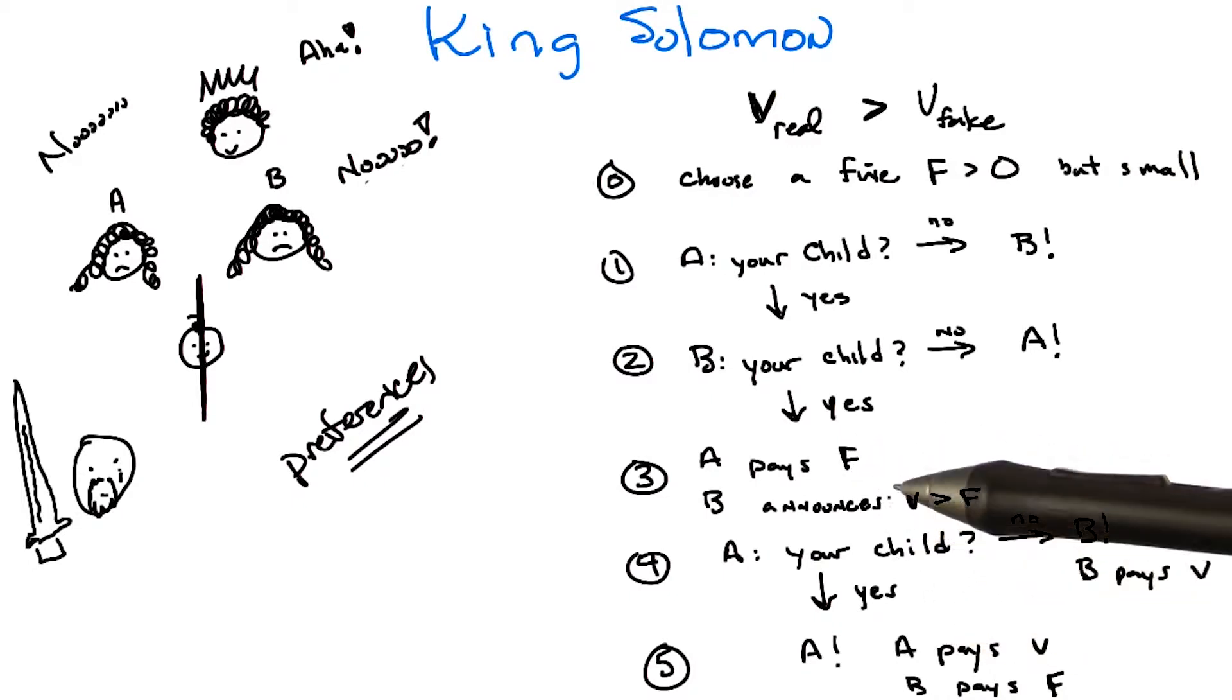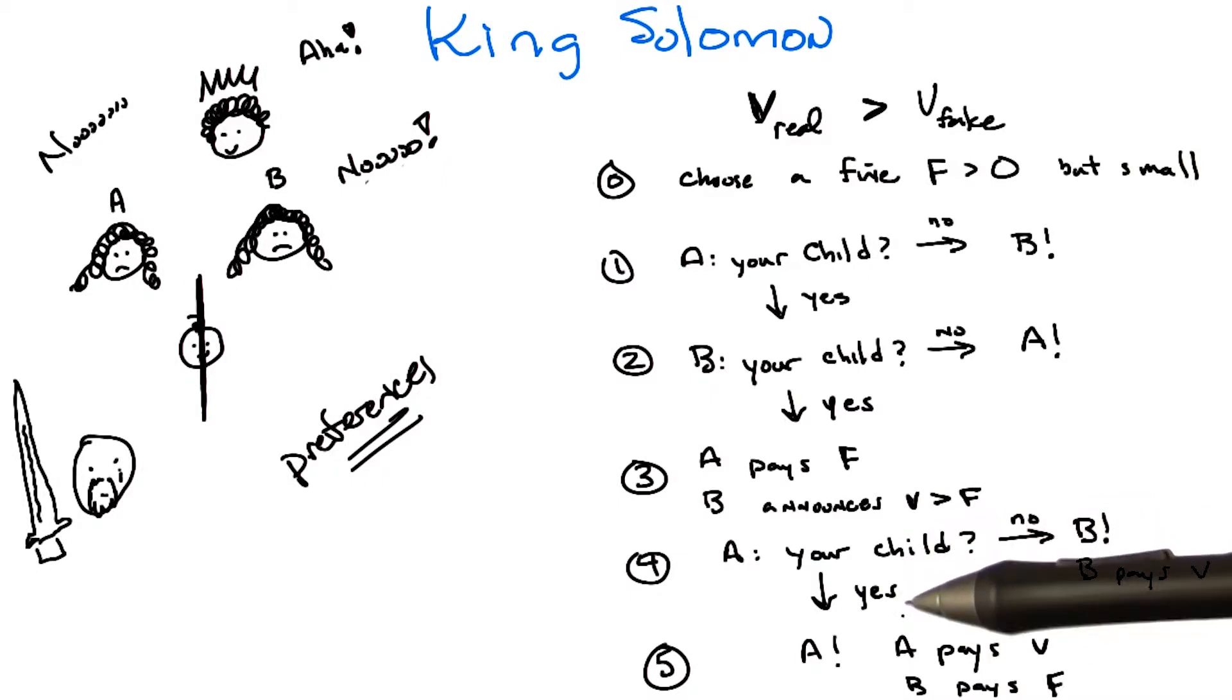I see. So now what you're saying is, so that is a little bit weird and asymmetrical, right? So B gets the baby for V real, but if it was A who had the baby, then A is going to get the baby for V fake, which is less. Right, but it doesn't matter.